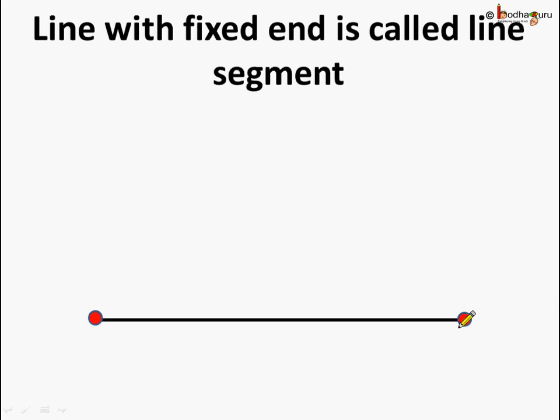So, this is a line segment because it has two fixed end points. So, this line has the two end points. Thus, a line segment has two end points. This is the line segment AB as it has two end points, A and B. So, A and B are the end points of the line segment AB and it has a fixed length. So, a line segment can be measured.